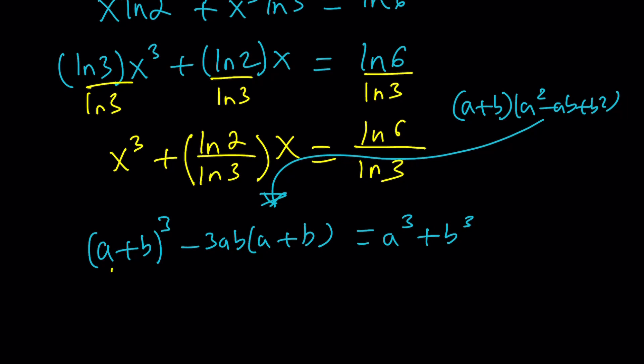if you think about a plus b cubed minus 3ab times a plus b, in other words, you expand this using binomial theorem and then subtract the two terms in the middle that gives the first plus the last term, which is actually the sum of two cubes.